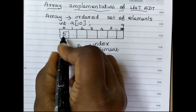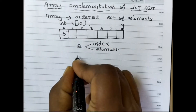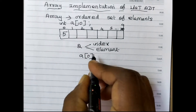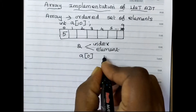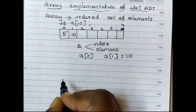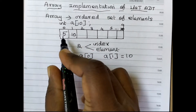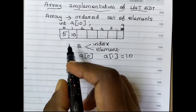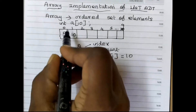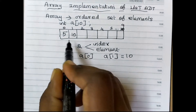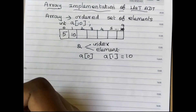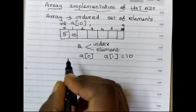So if you want to print the first element, we will use the index value — for example, a[0]. The array will be created and all elements will be fixed. Now we can start with how to perform the operations in the array.